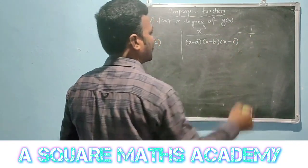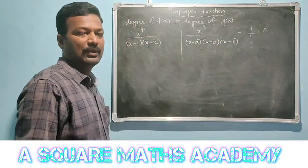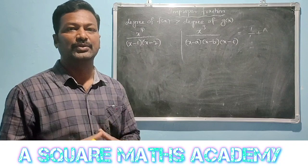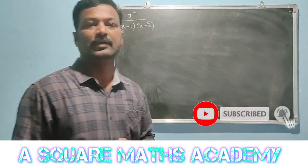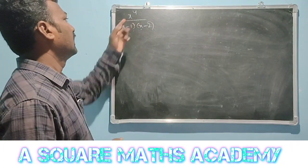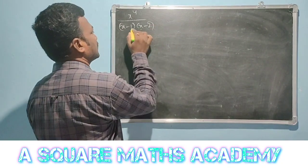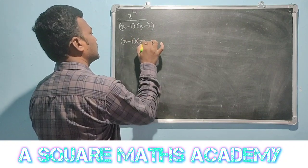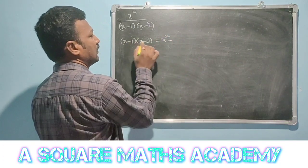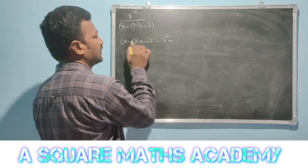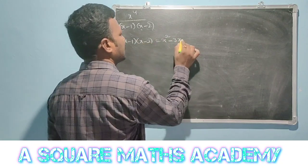The same process follows A, B, C. Please subscribe to our channel. Now see here: x to the power 4 divided by (x minus 1)(x minus 2). Expanding: minus times minus gives plus, so (x-1)(x-2) gives plus 1 times 2.